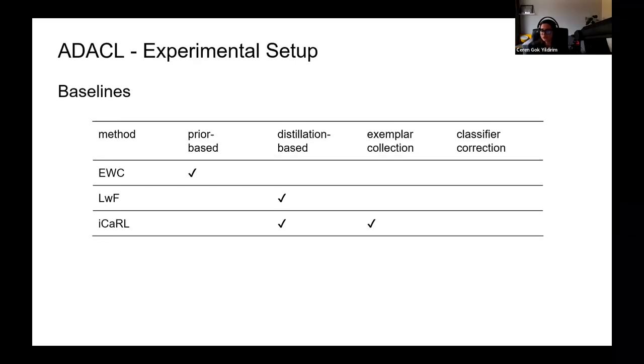ICARL leverages stored examples from past tasks to mitigate catastrophic forgetting and improve task-specific learning. Weight alignment is a classifier correction method that adjusts the weights of the neural network, specifically focusing on the classifier layer. Its aim is to prevent bias or imbalance in the classifier by appropriately aligning the weights, ensuring fair and accurate predictions across different classes or tasks.